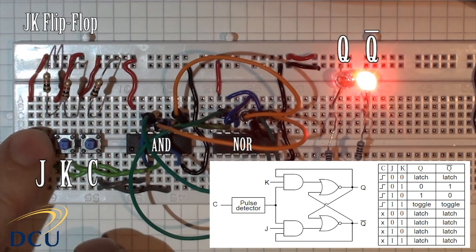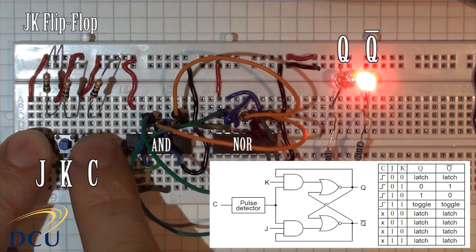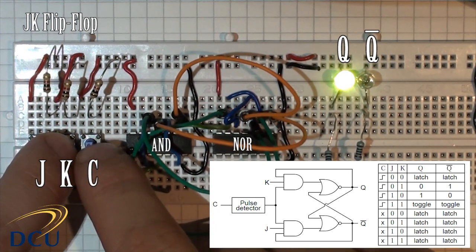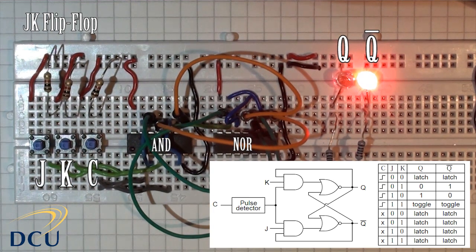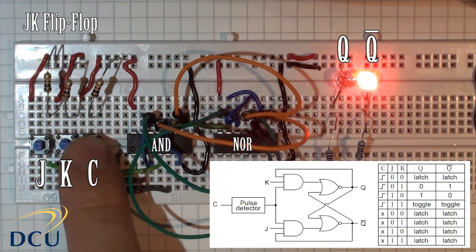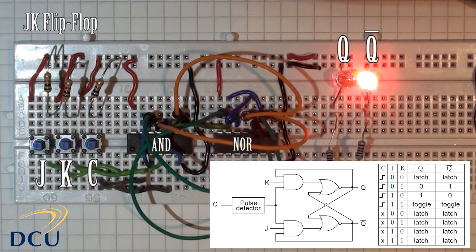If we press the J input and press the clock pulse true, you can see it changes so that Q equals 1 and Q bar equals 0. If I press the K input and press the pulse, we get Q equals 0 and Q bar equals 1. That is our set and reset states, the same operation as in the SR flip-flop. When we have no button pressed — J equals 0, K equals 0 — and I press the pulse, you see that we get no change in our circuit.